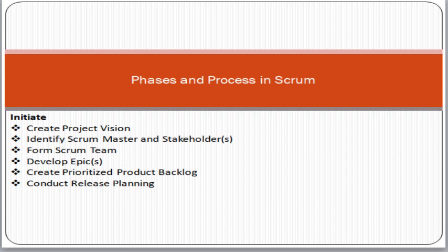Let's start. Phases and process in Scrum — so what is actually Scrum? Scrum is a framework which we use for the implementation of software or IT projects. It is a framework based on the Agile approach, and it says that we can divide the project into multiple chunks and deliver the project to the customer in a multiple-chunk or sprint approach. This is a high-level introduction of Scrum.